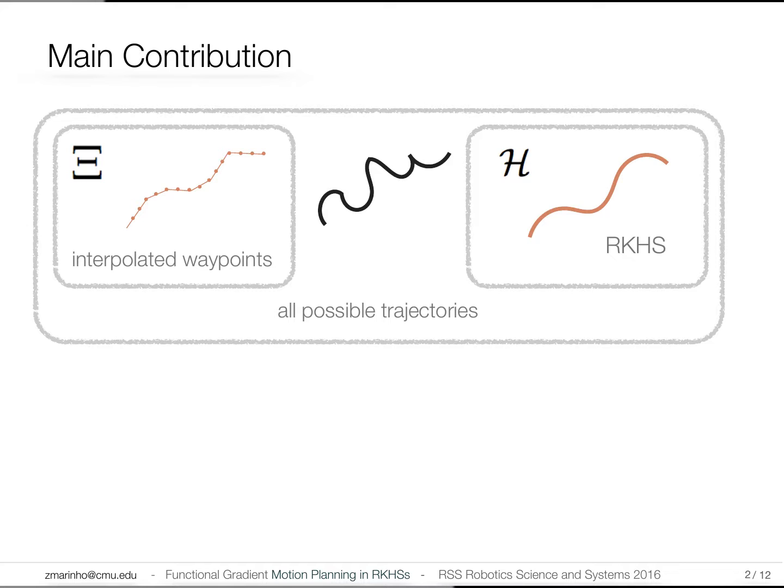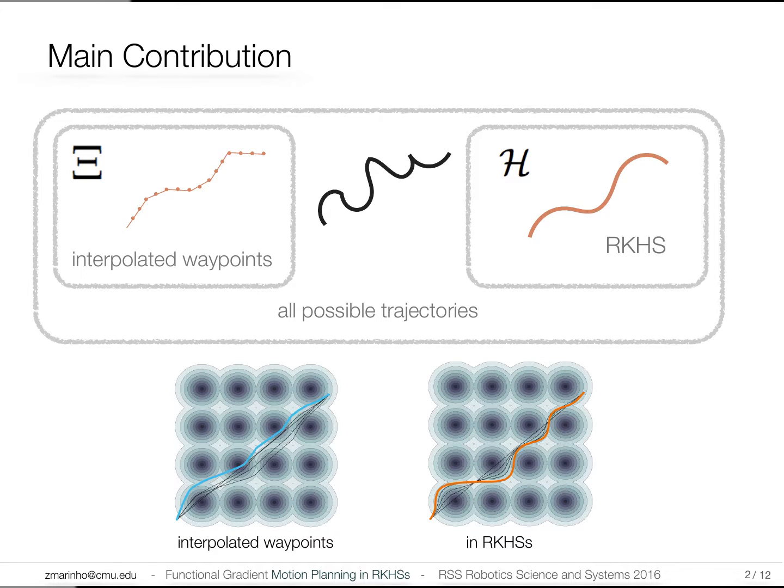We consider reproducing Kernel Hilbert spaces, which impose more structure in favor of an inherently smooth space. This work subsumes previous work because we can represent interpolated waypoints as a specific kernel, and we still generalize this to arbitrary reproducing kernels. The practical implications is that we need fewer parameters to represent the trajectory.